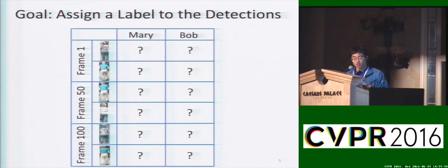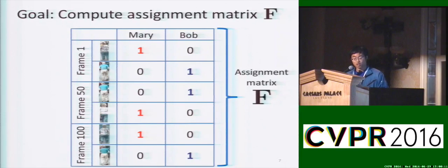We formulate Identity-Aware Tracking as assigning a label to each person detection. In our example, this is the correct assignment. This assignment can be encoded in an assignment matrix, which we denote as F. So, the goal of Identity-Aware Tracking is to compute the assignment matrix F.